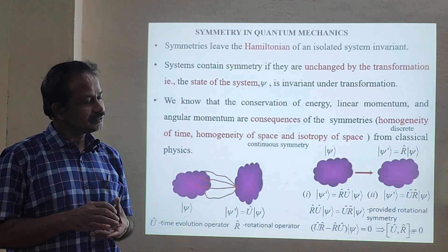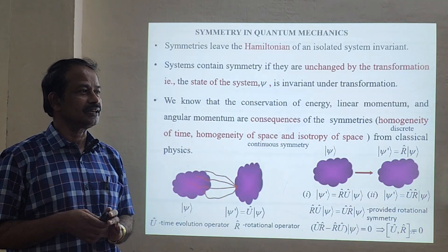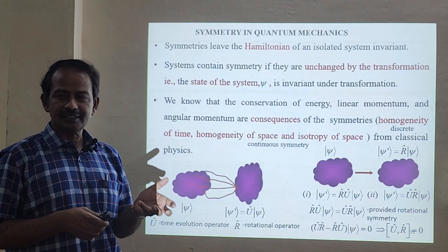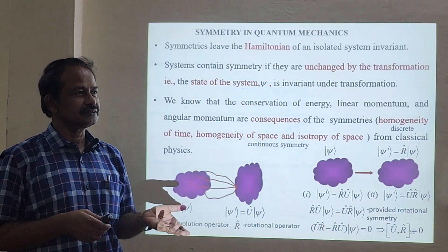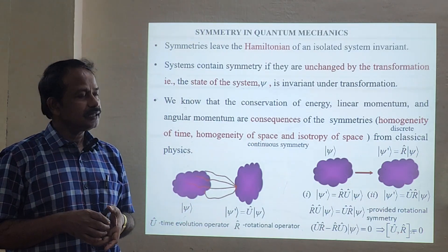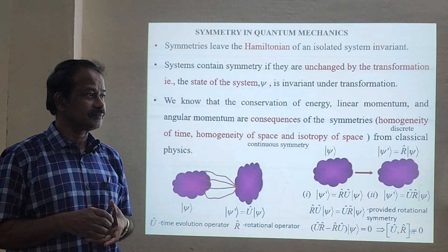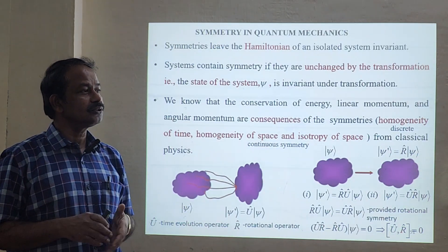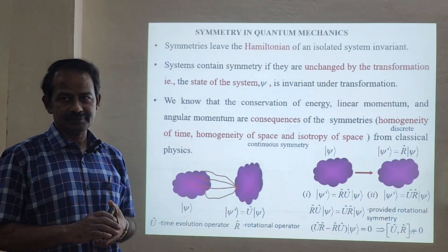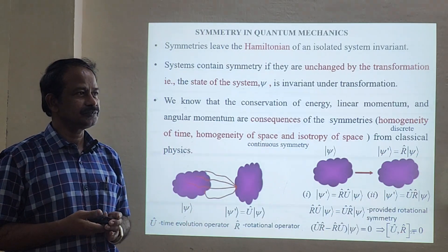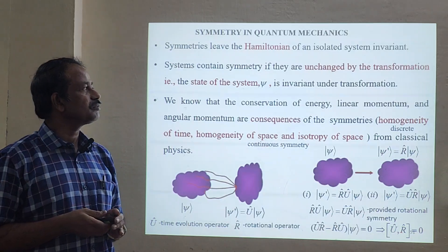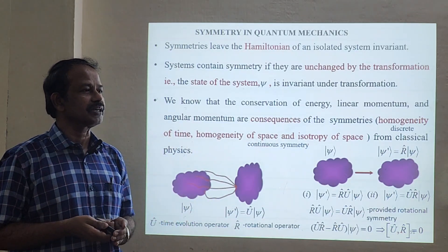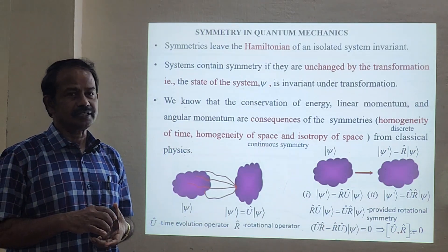In classical physics, whenever we talk about symmetry, we always think about the equation of motion. The energy, or observables such as energy, angular momentum, or linear momentum, will be conserved — they are constant quantities. Similarly, in quantum mechanics, those observables will also be conserved. Energy, linear momentum, and angular momentum are all observables in quantum mechanics and are conserved quantities.